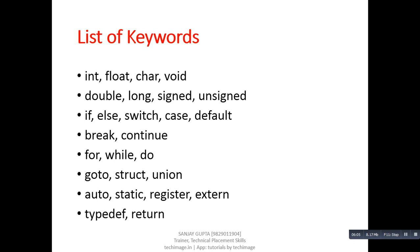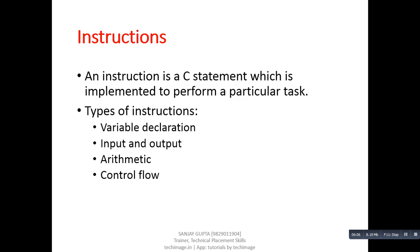Instructions. This is next feature of C. An instruction is a C statement which is implemented to perform a particular task. It means, by using an instruction, we can perform any task in C program. There are various types of instructions available in C. First is variable declaration. Second is input and output. Third is arithmetic. And fourth one is control flow instruction.